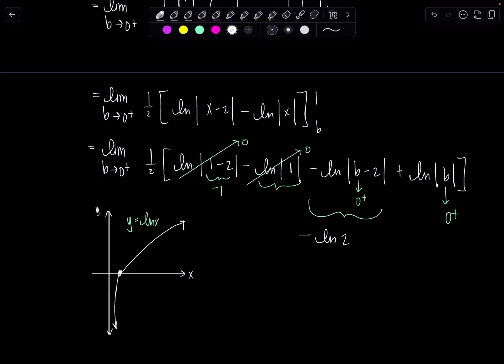So this whole term here is approaching negative infinity. So let's see what we got going on. I have one half times negative ln of two minus infinity. Well, negative infinity minus a number, it's still going to go to negative infinity. Even if I multiply by a half, it's still going to negative infinity.